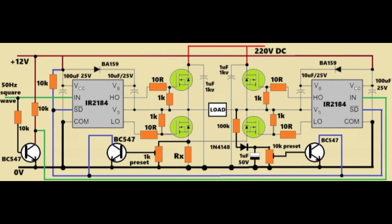Here we are using two IR2184 ICs for driving two half-bridge stages, which together become a full H-bridge inverter. This inverter is converting 220V DC into 220V AC, pure square wave, across the load using four MOSFETs.